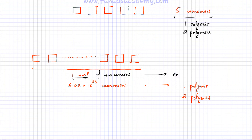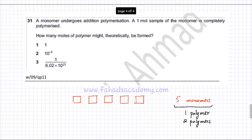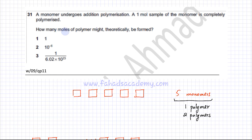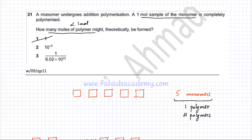So the amount of polymers formed would always be less than one mole. Coming back to the question: if you have exactly one mole of monomers, the amount of polymers formed would always be less than one mole. Therefore, option one is incorrect — you cannot form one mole of polymers from one mole of monomers. Any answer less than one mole is correct, so options two and three are correct, and according to the marking scheme, the answer is option C.